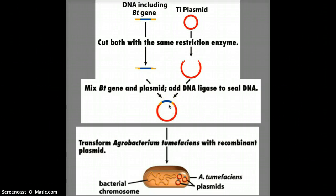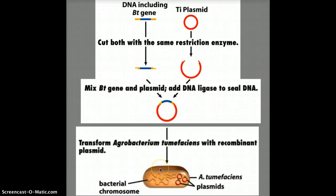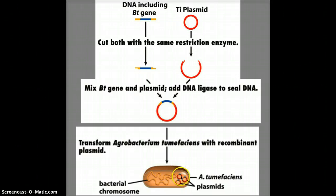Next, we're going to put this into a specific type of bacteria — the name is shown here, but you don't have to remember it. We're going to make that bacteria take up that recombinant DNA. This bacteria is special because it actually infects plants, so we're going to use it to infect plants, and when it does that, it's going to put that plasmid into the plant — we're going to see that in the next picture.